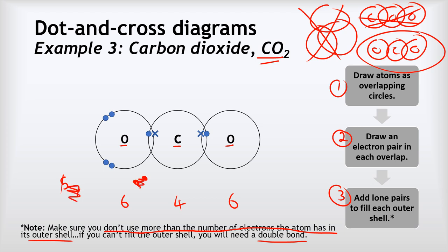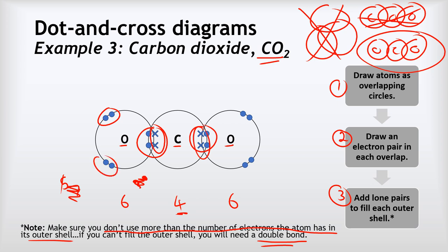Instead of adding another lone pair, we need to draw a double bond — a second shared pair in the overlap between the oxygen and carbon. The same idea plays out for the other oxygen: one lone pair, two lone pairs, and then a double bond instead of a third lone pair. Carbon now has four electrons from each side bringing its outer shell up to eight, with only four of them coming from the carbon itself. Each oxygen has eight electrons in its outer shell — the four in the double bond and the two lone pairs — but only six have come from the actual oxygens. And there we go: that is carbon dioxide.